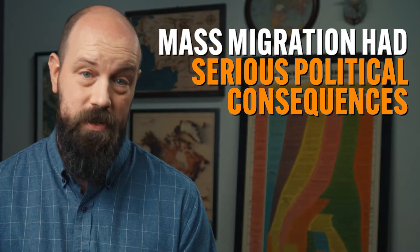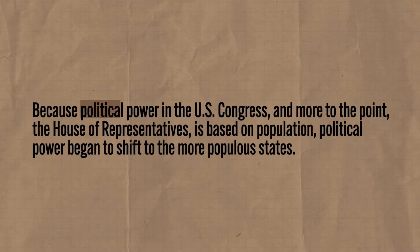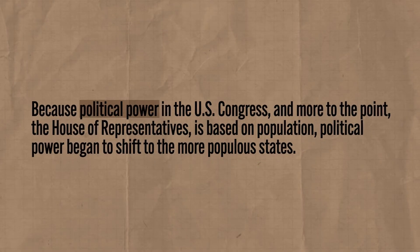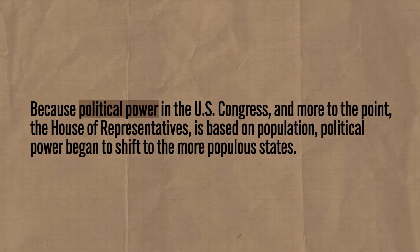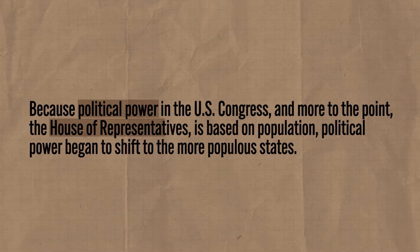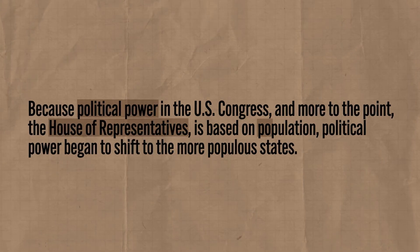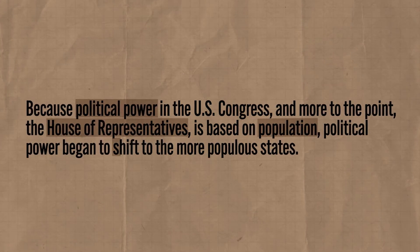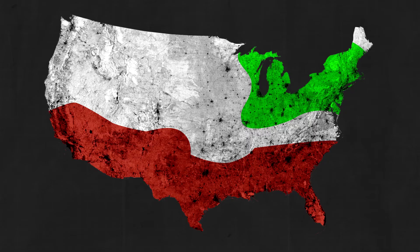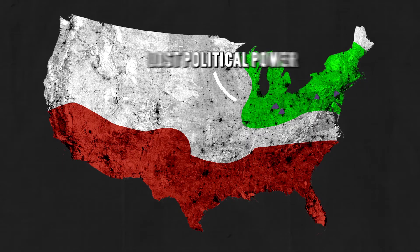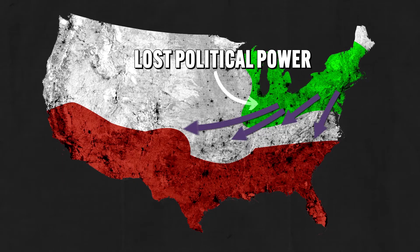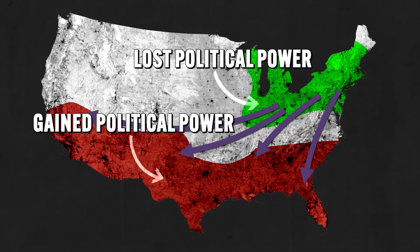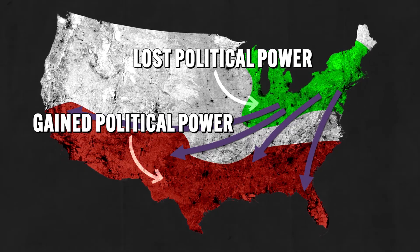I don't just mention this for poops and giggles — this mass migration had serious political consequences. Because political power in the US Congress and, more to the point, the House of Representatives is based on population, political power began to shift to the more populous states. That meant that the states of origin lost political power while the destination states gained political power.